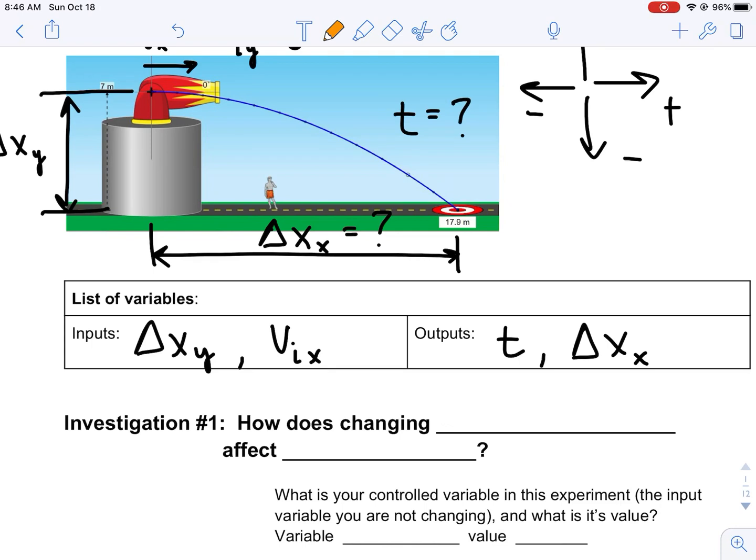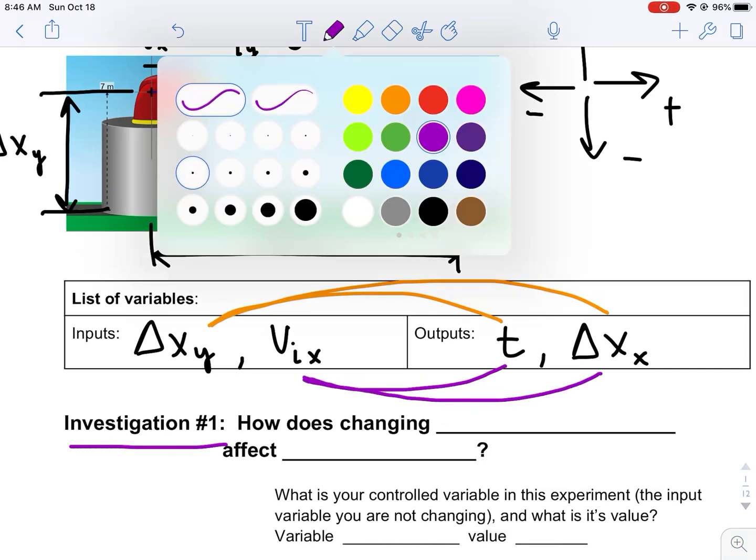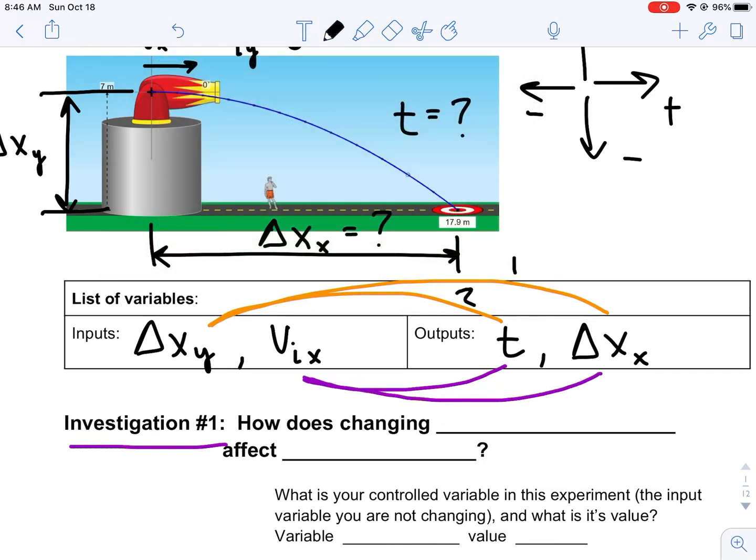There's four possible combinations that we could make here. We could say, if we modify the height, how does it affect the time? Or, if we modify the height, how does it affect the horizontal displacement? The other two combinations we could make are, if we modify the horizontal velocity, how does that affect the time it's in the air? Or, if we modify the horizontal velocity, how does that affect the horizontal displacement? When it says investigation number one, there's four possible combinations. We could say one, two, three, four. So, let's go ahead and investigate.